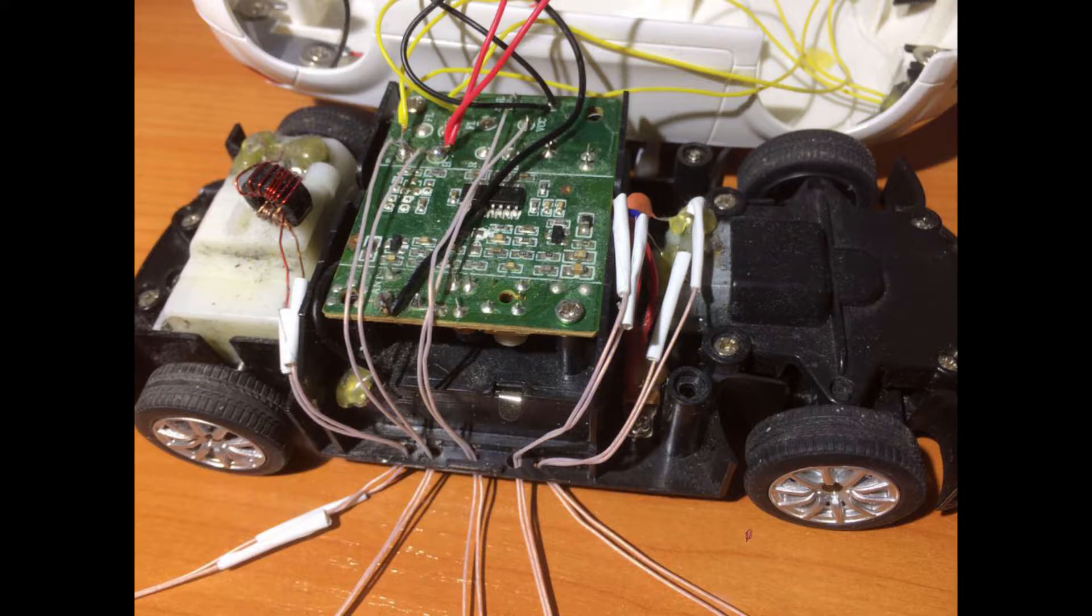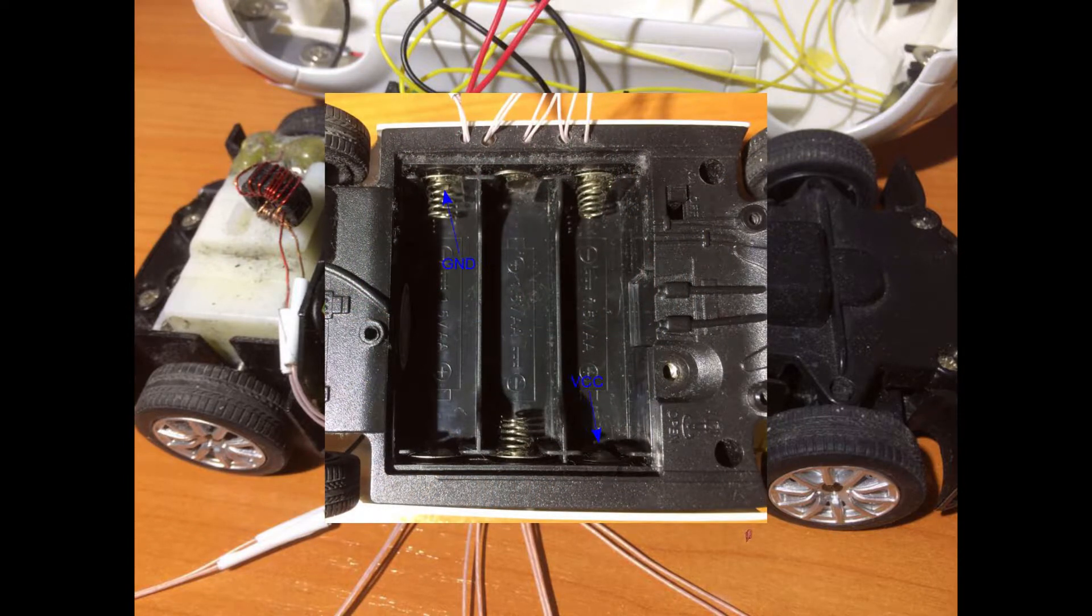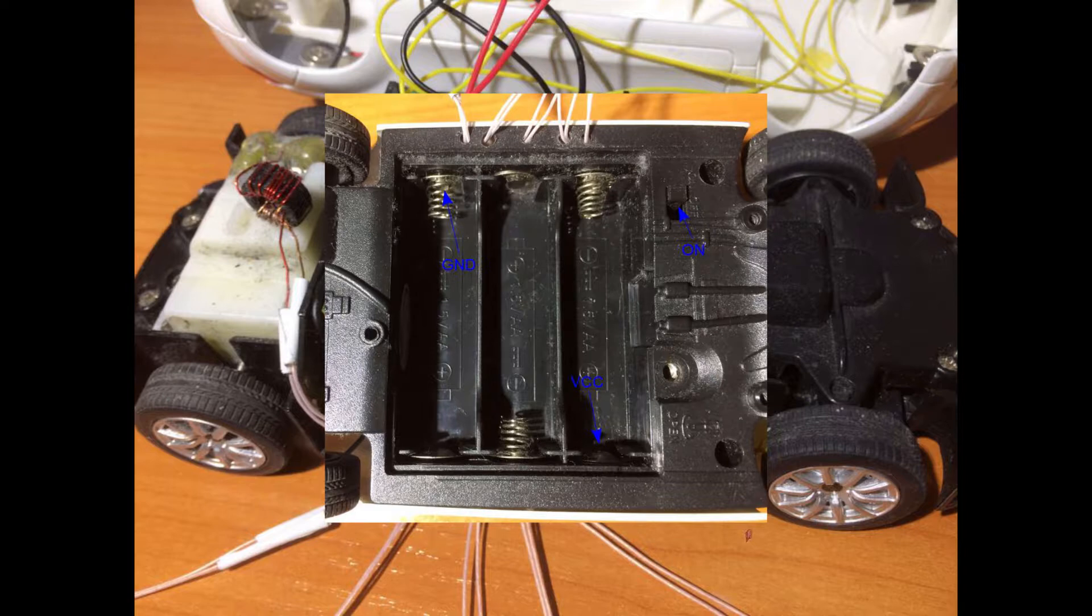In case if you have problems finding where you have to solder the VCC and GND wires you can simply connect the two wires to the positive and negative power terminal of your car because that will be the same. Only in that case the on-off switch has to be in on position otherwise the VCC wire will be disconnected from the remote control car circuit board.